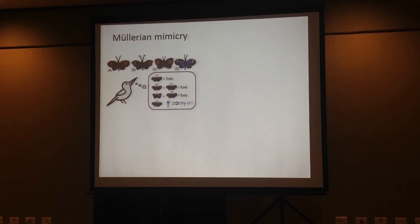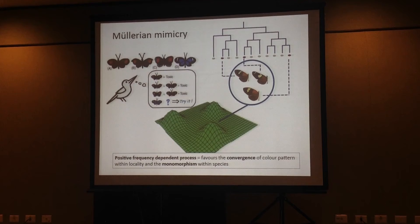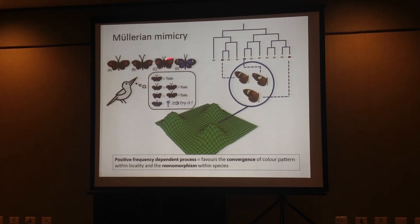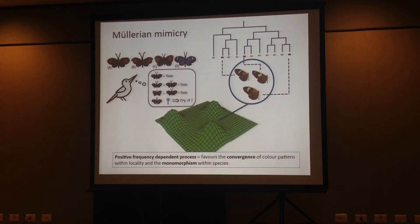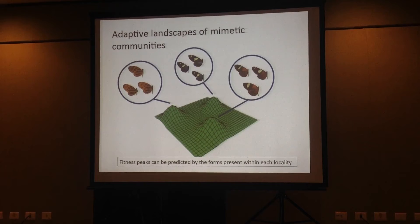Müllerian mimicry is an interaction where toxic organisms converge in color patterns. The idea is that birds, for example, or other visual predators, will learn to associate a warning signal with toxicity. This can promote convergence among different toxic species that are distantly related, and also monomorphism within species. This is a positive frequency-dependent selection process.